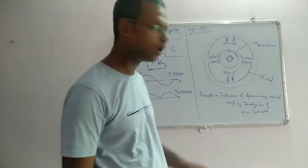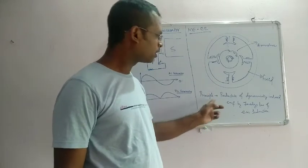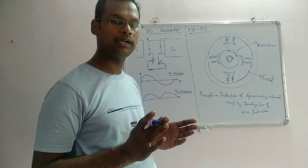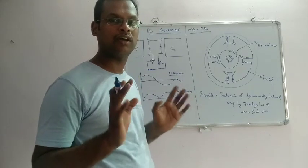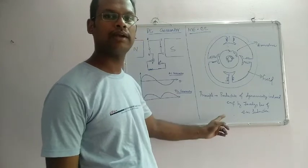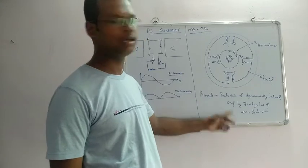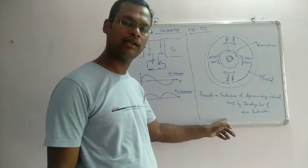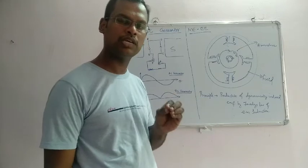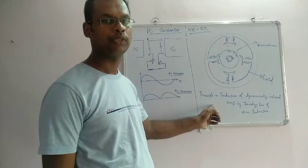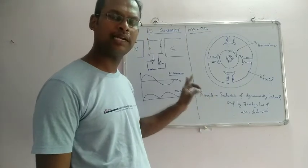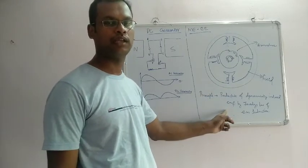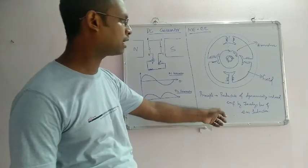The working principle of the DC generator is Faraday's law of electromagnetic induction. When a magnetic field changes, an EMF is induced. By the production of dynamically induced EMF, this DC generator converts mechanical energy to electrical energy in the form of DC.